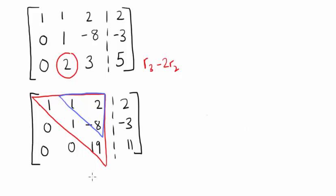We now want to use the third row, which features only z, to eliminate z from the first two rows. So we're going to do row 2 plus 8 19ths of row 3, and we're going to do row 1 minus 2 19ths of row 3.